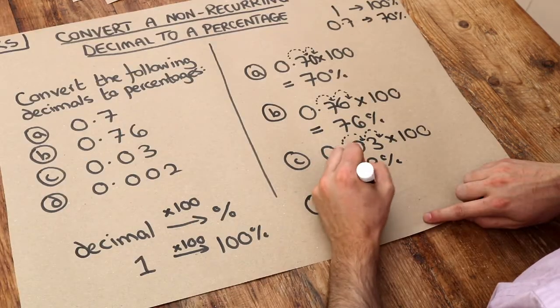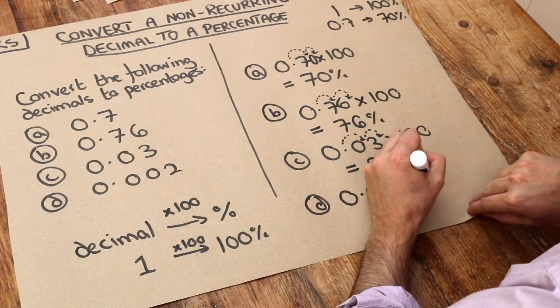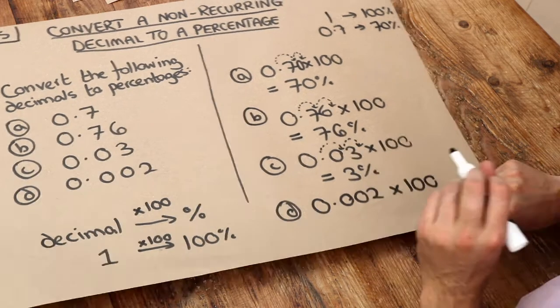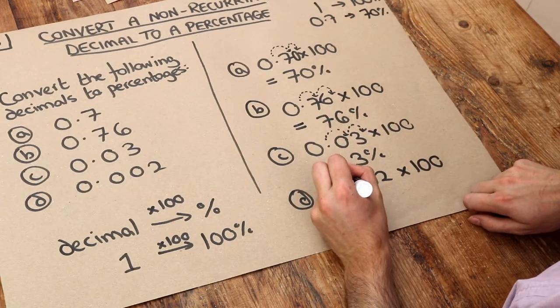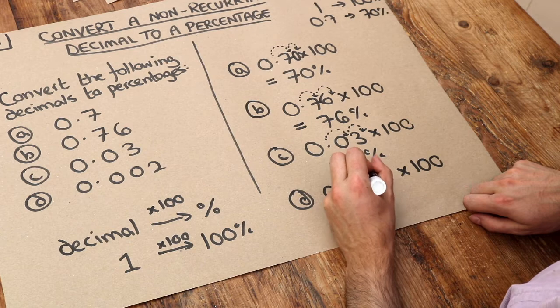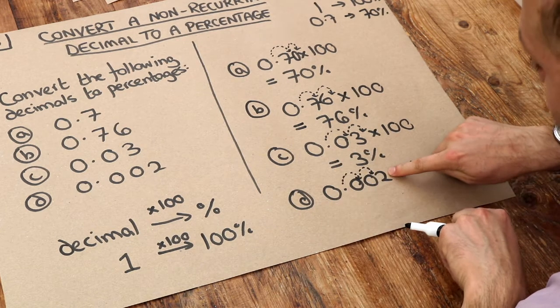And finally, 0.002, times by 100. If you move the decimal point two places, one, two, well, the decimal point isn't on the end of the number.